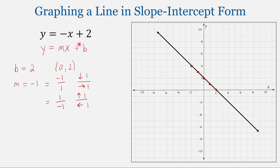A quick check: we have a negative slope, so the line is going to go down as we move from left to right across the graph, which is what we have here.